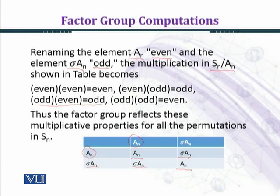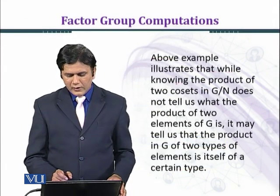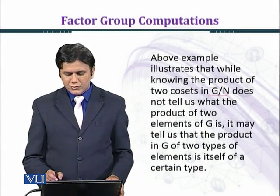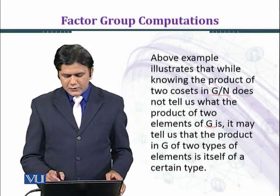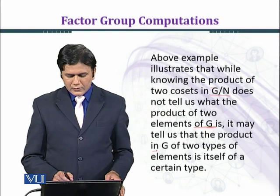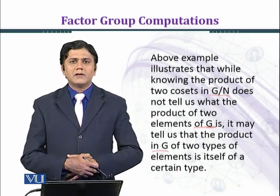When we multiply sigma·A_n by sigma·A_n we obtain A_n, because sigma times sigma gives sigma squared which is the identity — odd times odd equals even. Thus the factor group reflects these multiplicative properties for all permutations in S_n. This illustrates that knowing the product of two cosets in G over N may tell us that the product in G of two types of elements is itself of a certain type.